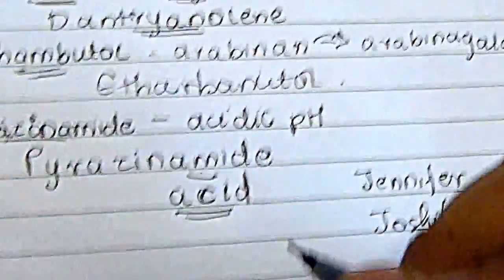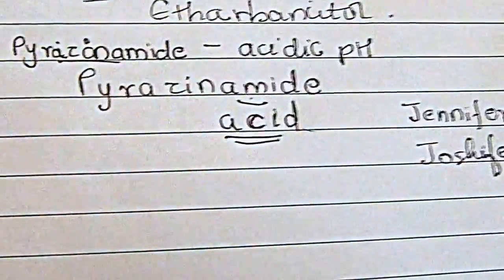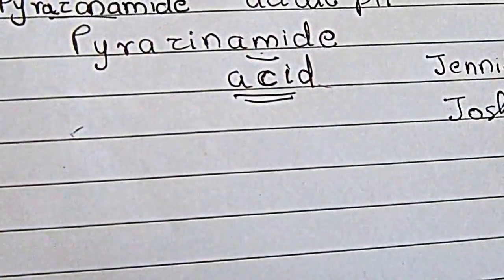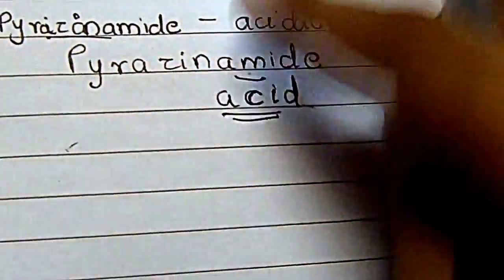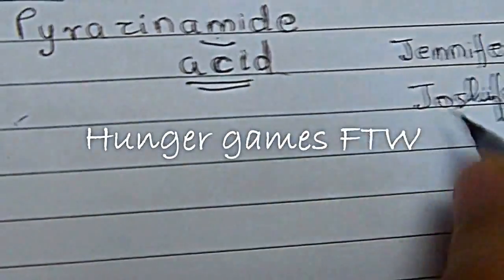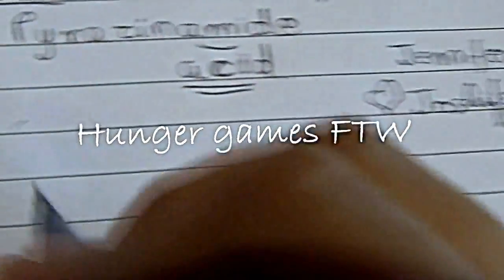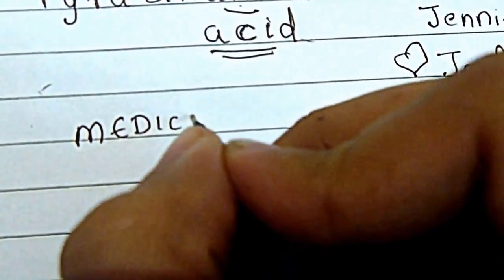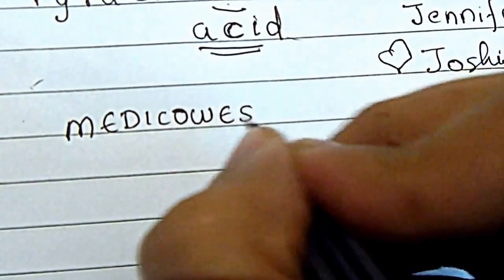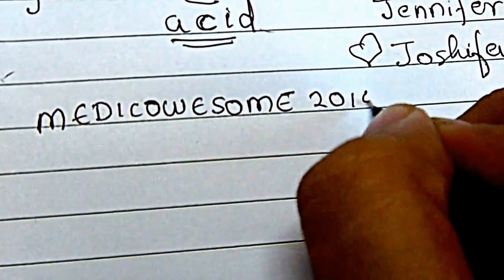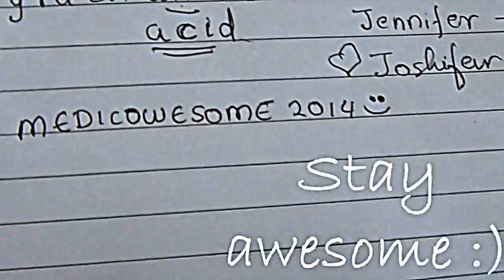You can do this with a lot of drugs — whichever drug you don't remember, take the drug, write its mechanism or something you keep forgetting, and just merge them like a silly fangirl making 'Joshifer.' Let me know if this tip was helpful, and if you make a mnemonic using this tip, share it with me. That's all — stay awesome!